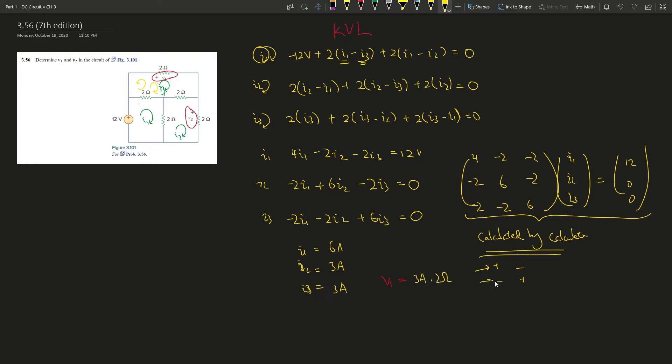If a current is entering the positive terminal, then we use the positive Ohm's law. If it's entering the negative terminal, then we use the negative Ohm's law for currents and stuff, right? So v1 is 6 volts.